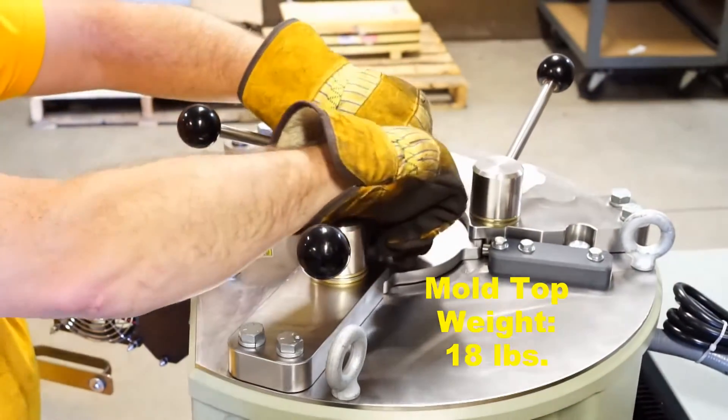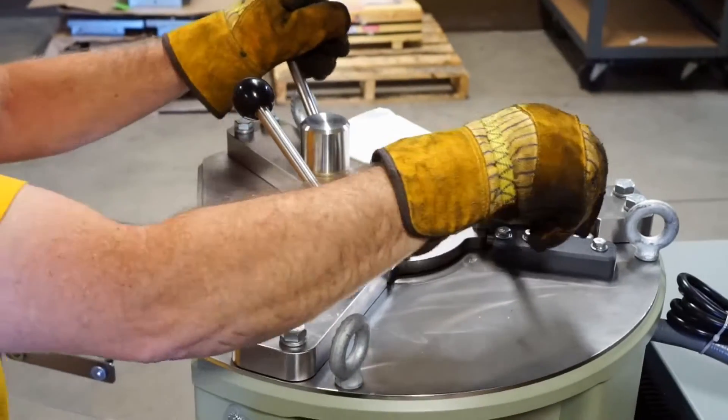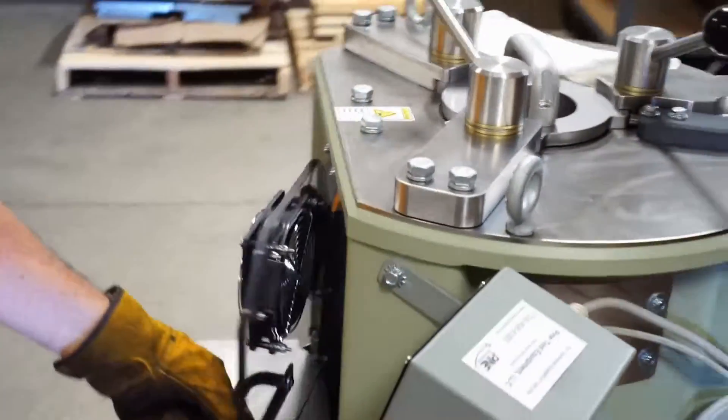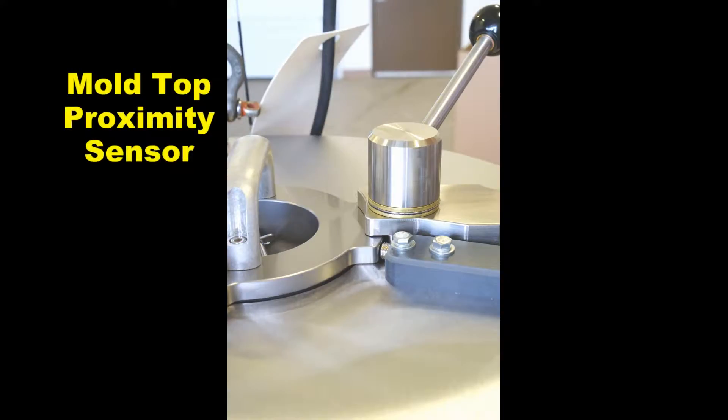The mold top is held down by three clamps, which are tightened by means of rotating handles. A proximity sensor detects the presence and position of the mold top.